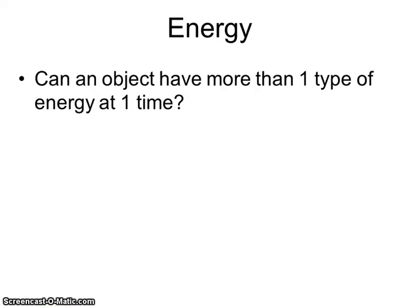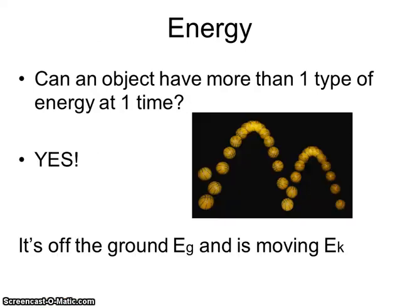Can an object have more than one type of energy at a time? Absolutely. Think about a ball bouncing and moving — it's moving and it's off the ground, so it has more than one type. When we talk about the total amount of energy, you would take whatever forms of energy it has, get those values, and add them up. That would be the total amount of energy.